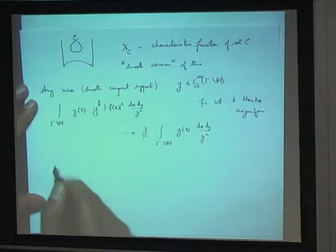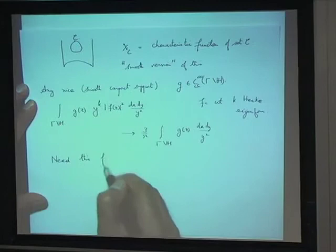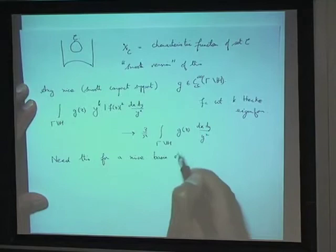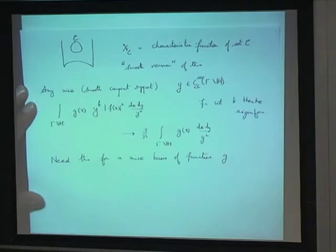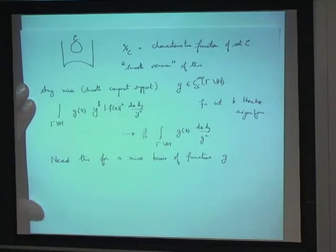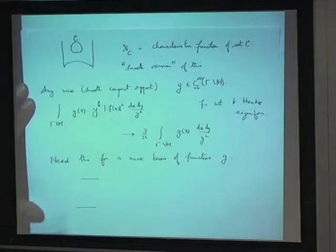I don't have to prove this for every choice of a nice function G. I can write down a basis for all functions which are smooth and of compact support on the space, and just prove it for every function in my basis. I'll tell you two ways to think about what a nice basis would be, and those two approaches lead to two different sets of problems.